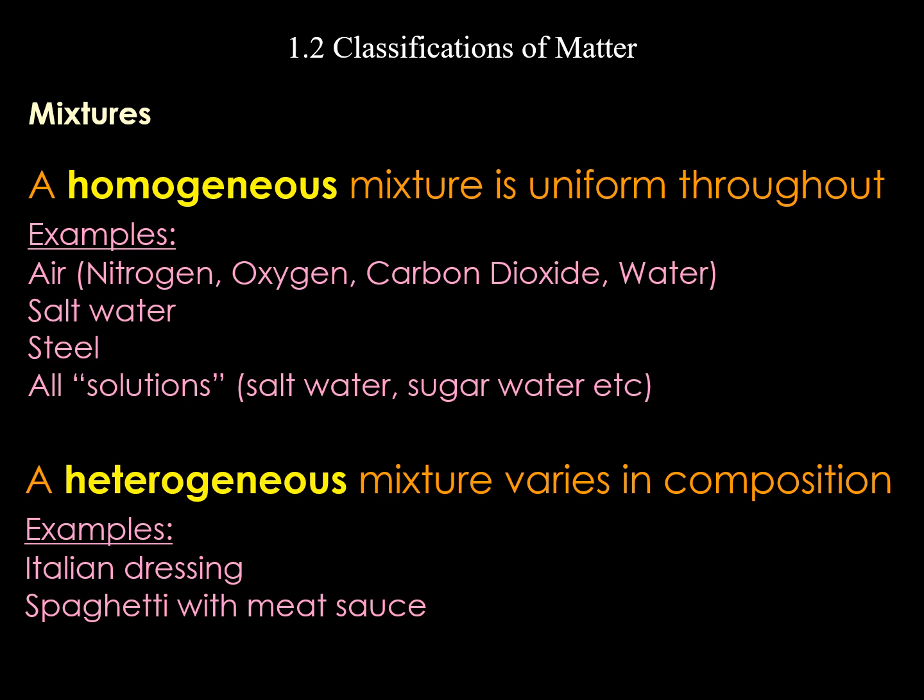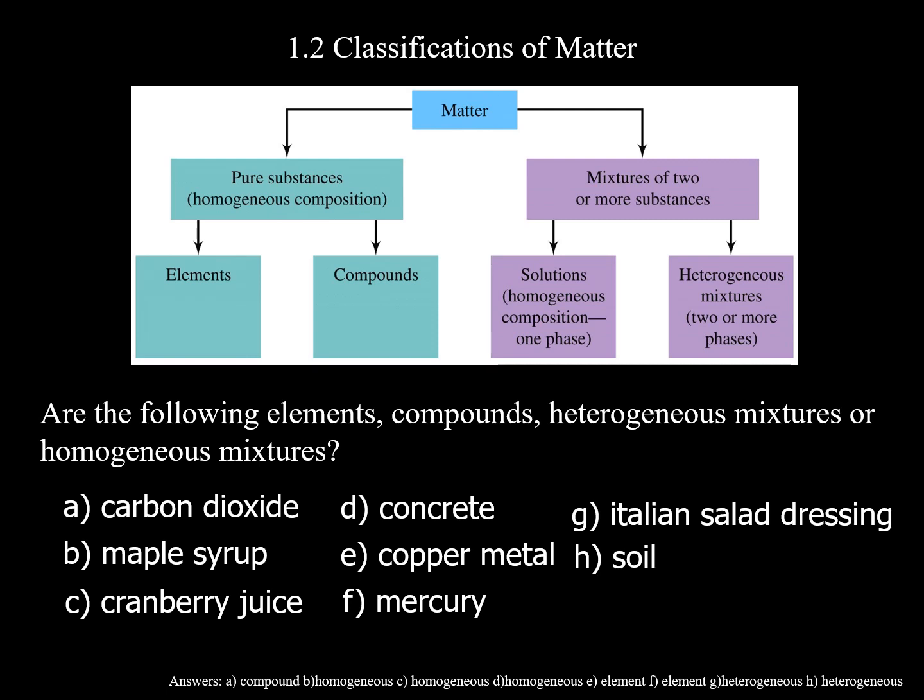Heterogeneous mixture — hetero means more than one. Italian dressing or an Italian salad, you can separate those things out. Spaghetti with meatballs — you can separate that into its components of meatballs, spaghetti, and sauce. As a review: matter divides into pure substances (elements or compounds) versus mixtures. Mixtures are either homogeneous, where you only see one thing but it's made up of many, or heterogeneous, where you can visibly separate the components.